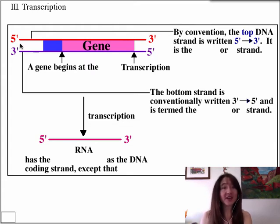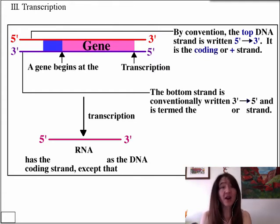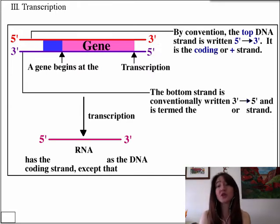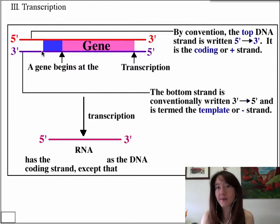Notice then that the opposite strand will be anti-parallel to the coding strand. It is the three prime to five prime strand. And as you might guess, instead of being called the plus strand, it is called the minus strand. So the top strand — the plus strand, the coding strand, the five prime to three prime strand — all of these are terms for that top strand, whereas the bottom gets the opposite nomenclature. It is the three prime to five prime strand, or the negative strand. Template is also the term given to this bottom strand, because it is this bottom strand that serves as the code to make the RNA. It is the template for the synthesis of the RNA.